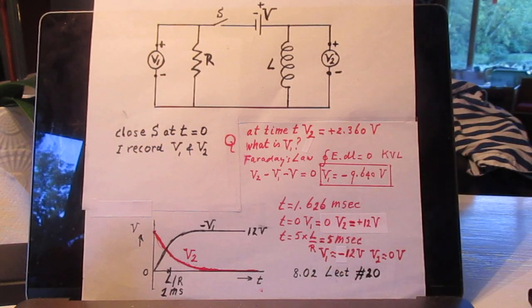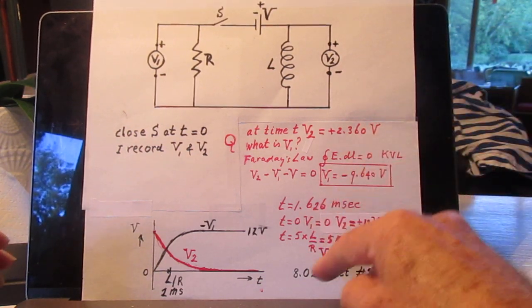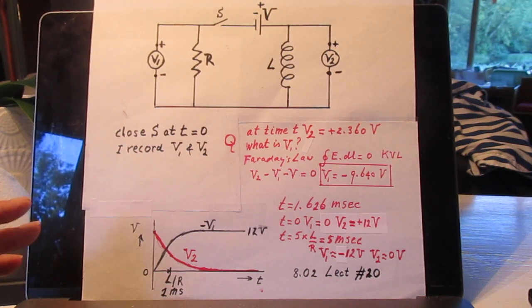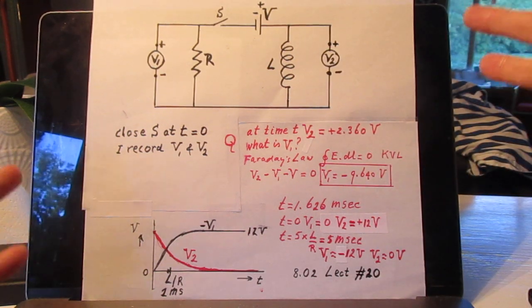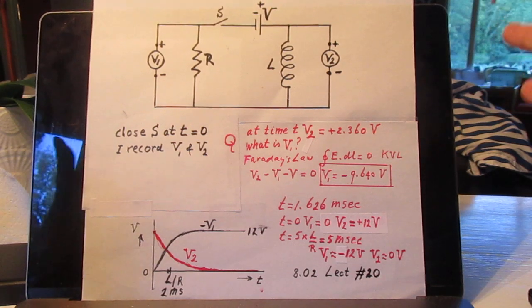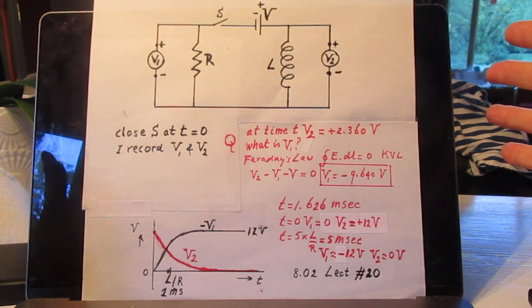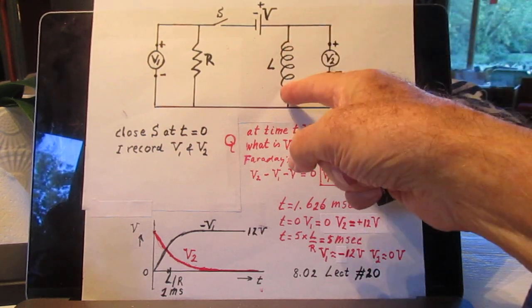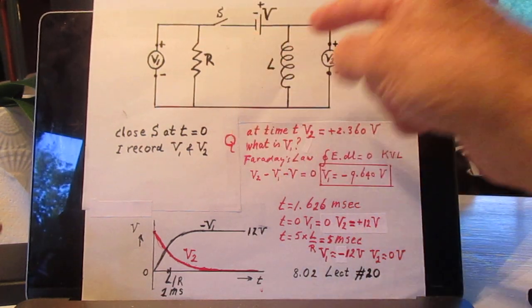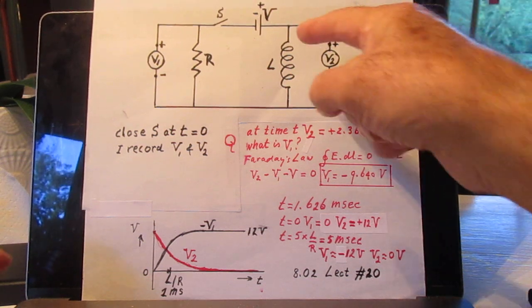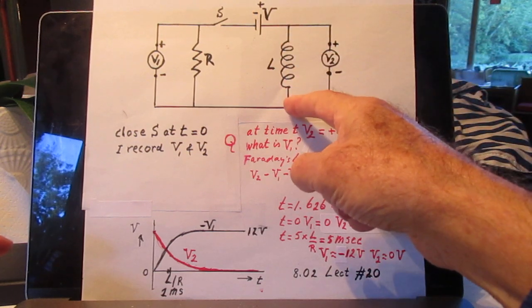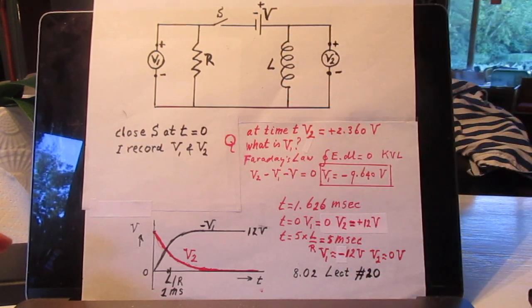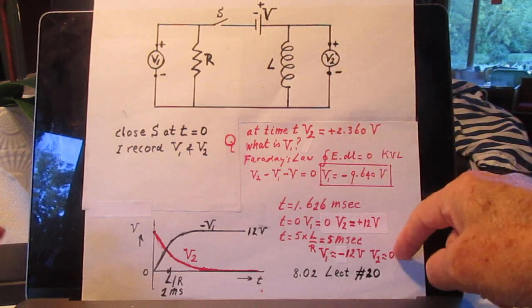Now, we wait 5 time constants, 5 times L over R. That is almost infinitely late. So, now, the self-inductor is powerless. LDIDT has really become 0. In other words, the full current, which is V over R, which is 1.2 amperes, flows through the self-inductor. There is no internal resistance in here. So, clearly, V2 will indicate 0 volts.